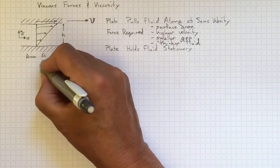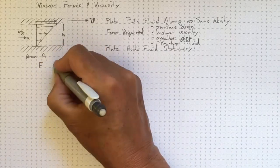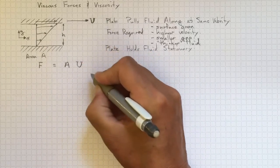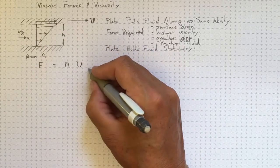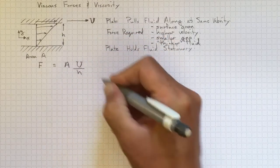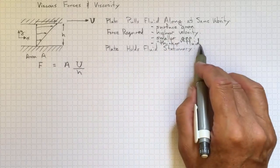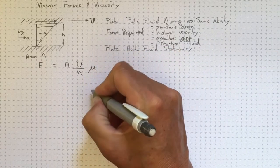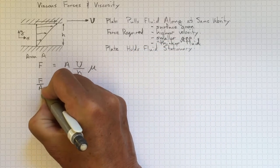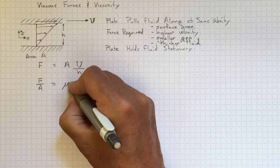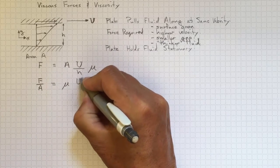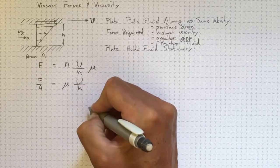So if we write that as an equation, the force will be equal to the area times the velocity, that high U velocity, divided by H, the height of the gap, and then times something to do with the thickness of the fluid. Let's just use the Greek letter mu right there. If we rearrange that, we'll get that the force over the area, that's going to turn out to be a stress, will be equal to that mu, which has something to do with how thick the fluid is, times the ratio of the velocity and the gap size.